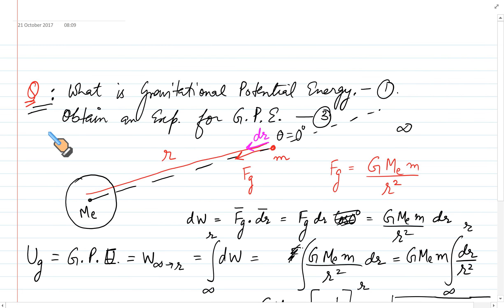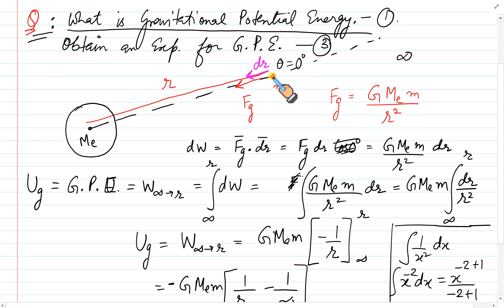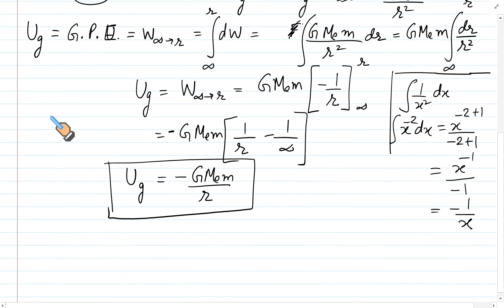Gravitational potential energy is the work done in bringing a mass m from infinity to a point r. یہ energy Earth (Me) اور mass m کے system میں store ہو جاتی ہے۔